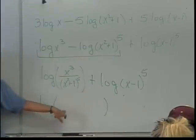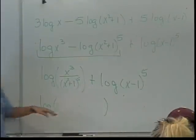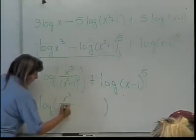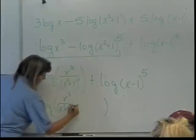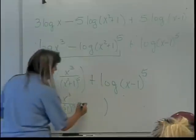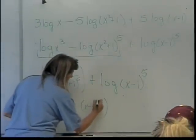What's going to be the first thing? The x cubed over x squared plus 1 to the 5th. And what's going to be the second thing? x minus 1 to the 5th.